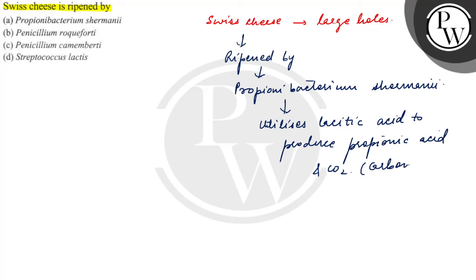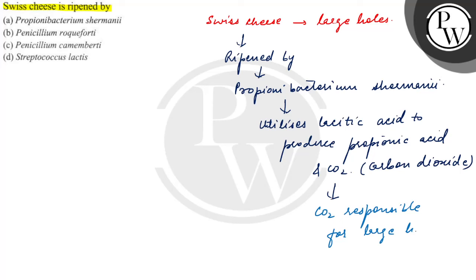The propionic acid and carbon dioxide produced — the CO2 is responsible for the large holes in the Swiss cheese. These large holes are characteristic of Swiss cheese, and the CO2 is released by Propionibacterium shalmini. I hope you understood it well, best of luck.